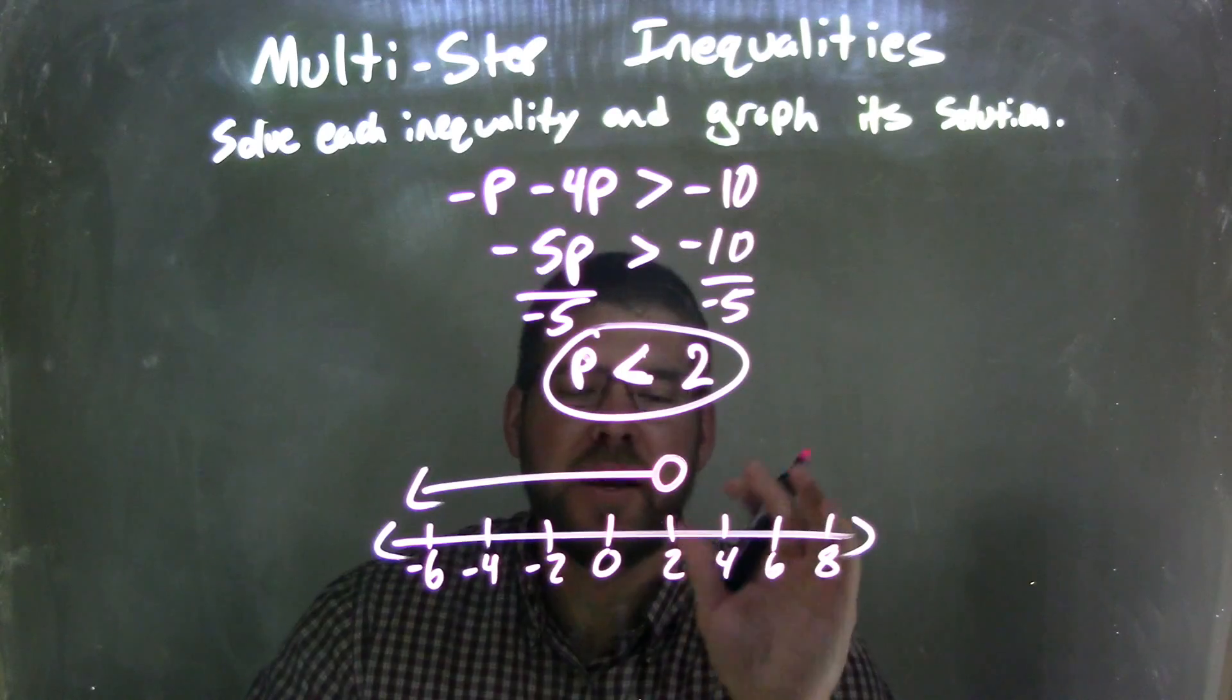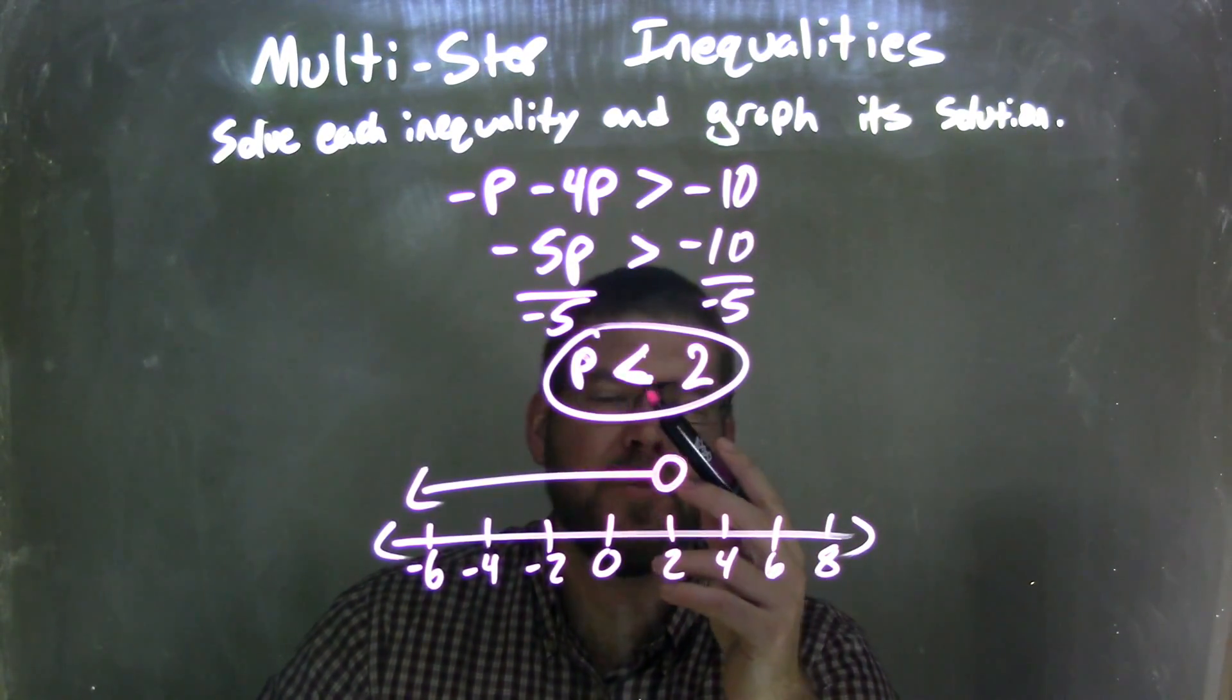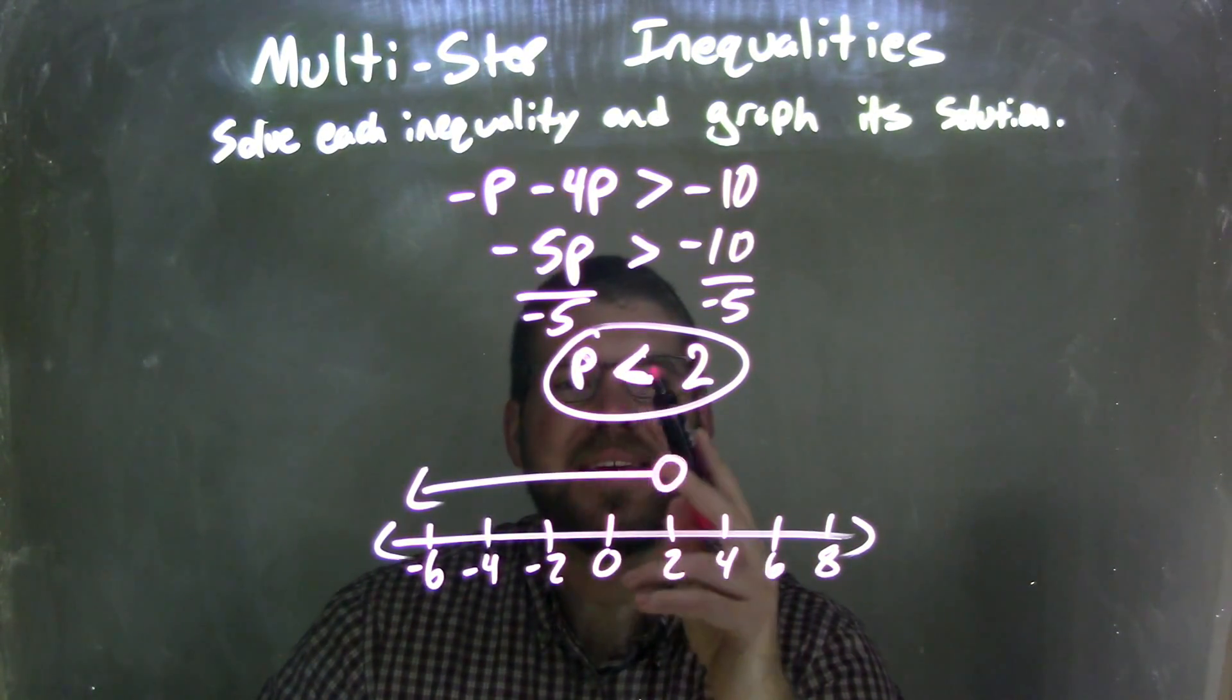And now we have our graph. That graph represents and matches our answer, which is our final inequality: P is less than 2.